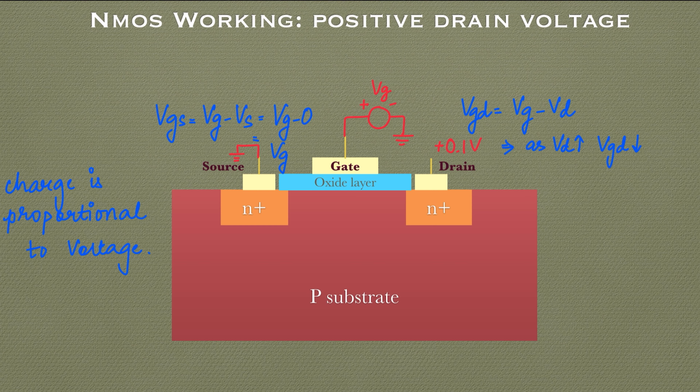We need to analyze the effective voltages at both ends of the channel. At the source side, the effective gate-to-source voltage VGS equals VG minus VS, and since VS is at 0 potential, VGS equals VG. At the drain side, the effective gate-to-drain voltage is VG minus VD, and as we increase the drain voltage, this value continuously decreases.